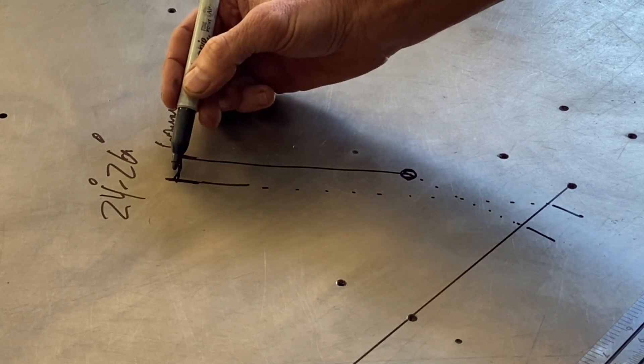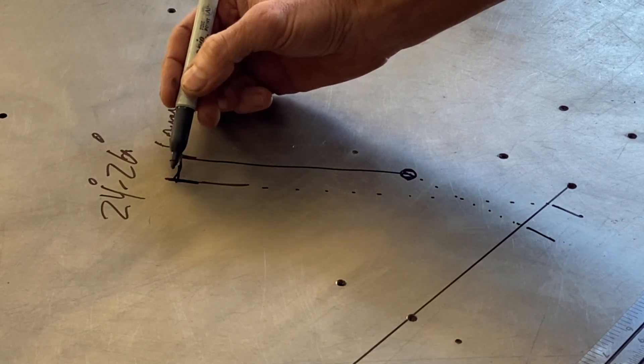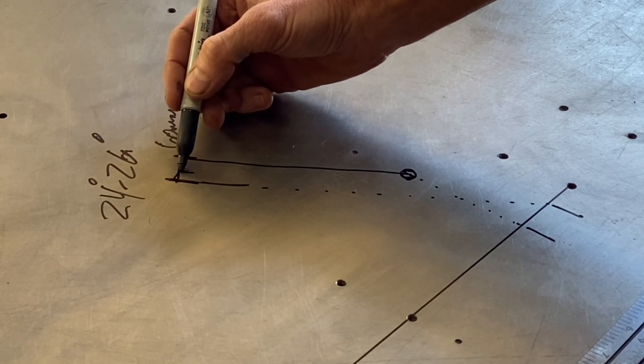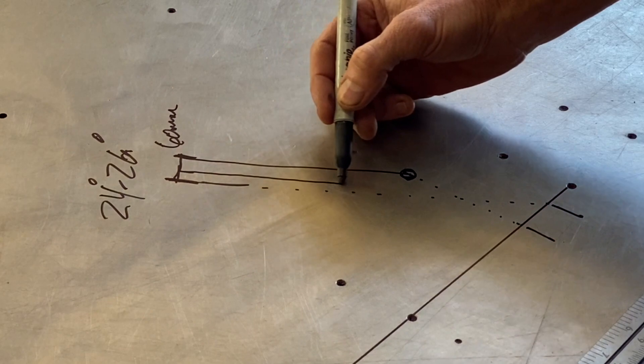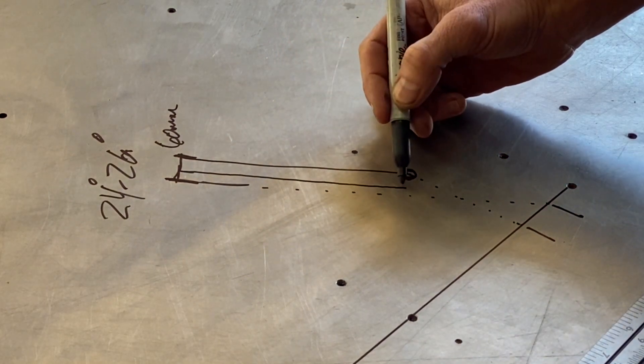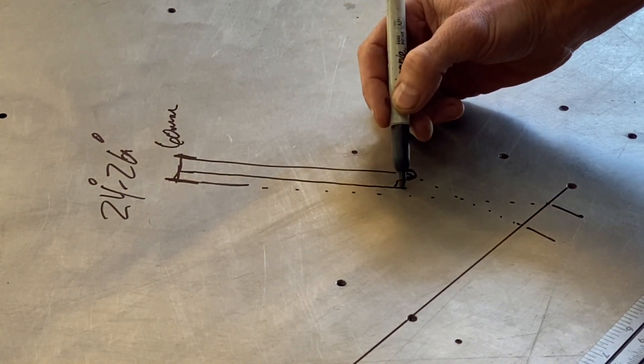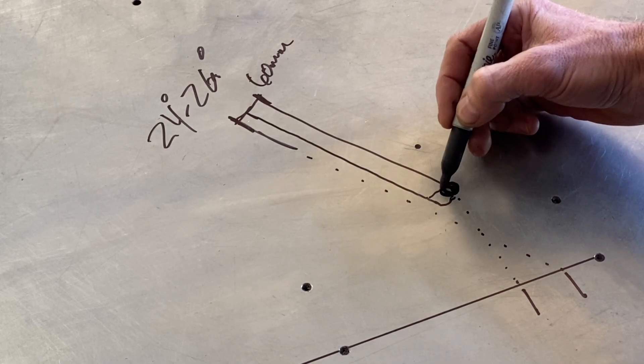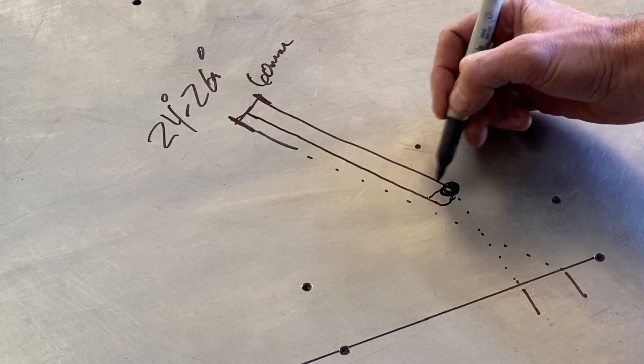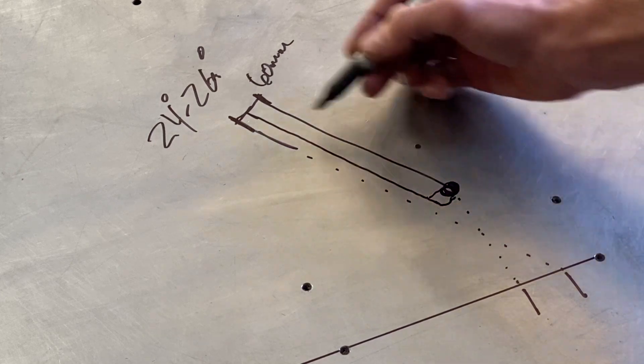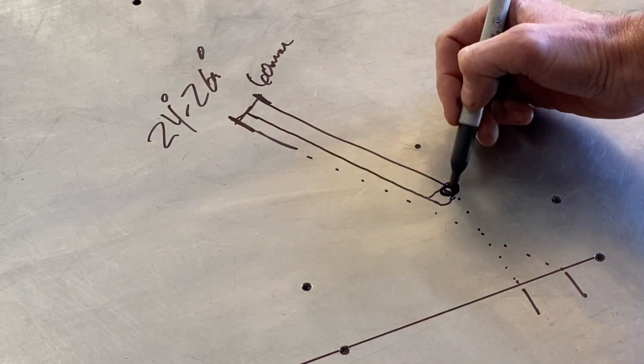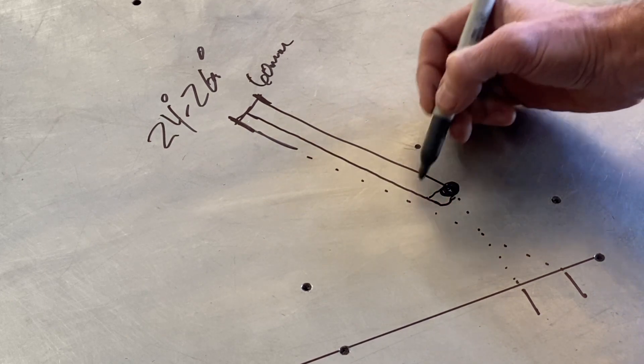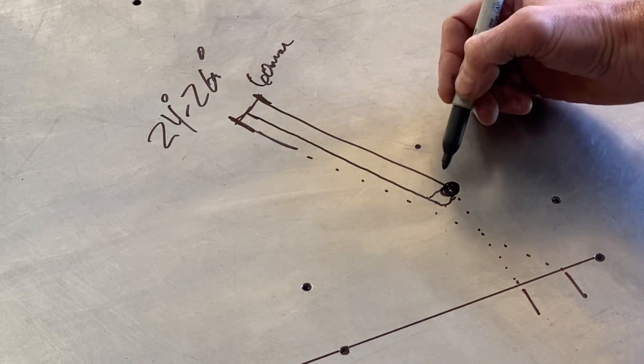Now you have motocross forks with triple clamps that have less offset. Now your forks come down here and you have a leading axle. You have a boss that comes out and it has your axle in front of the forks. Now these could very well be in the same spot. So does it matter if you have a centered axle fork or a leading axle fork? I don't think so.